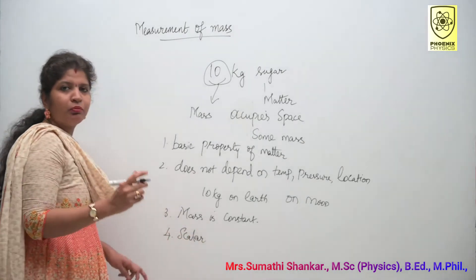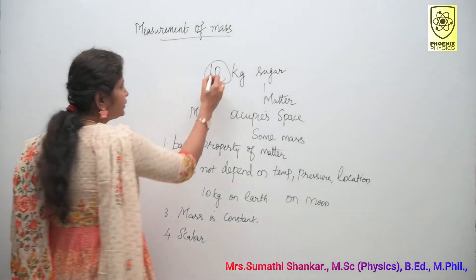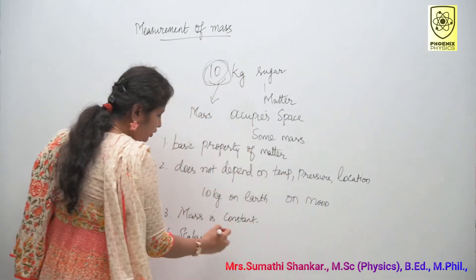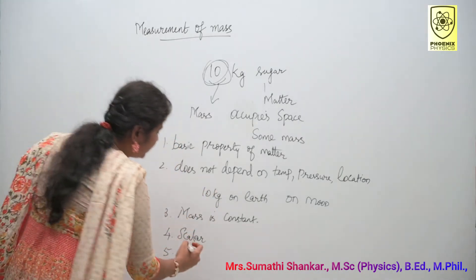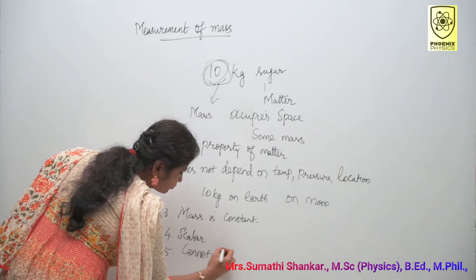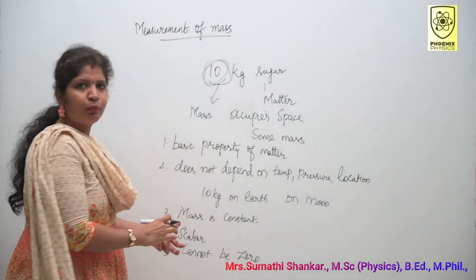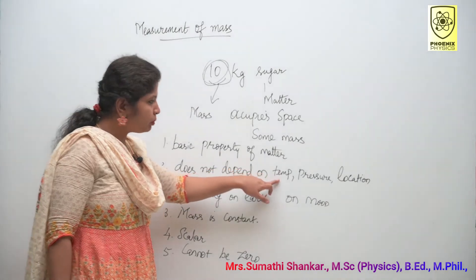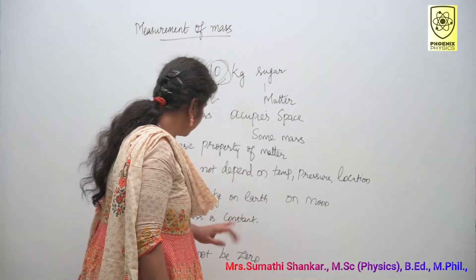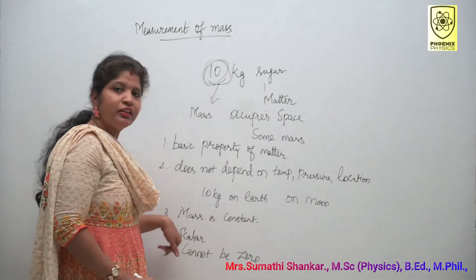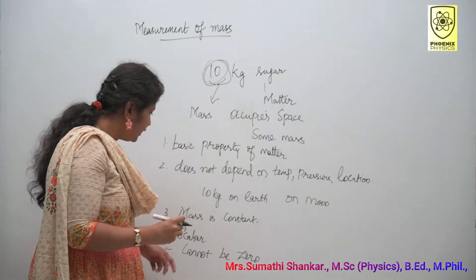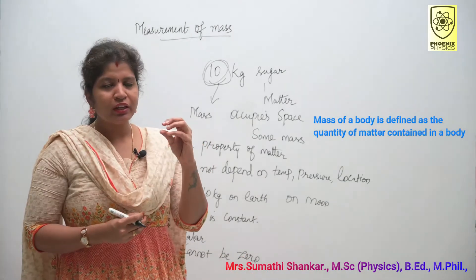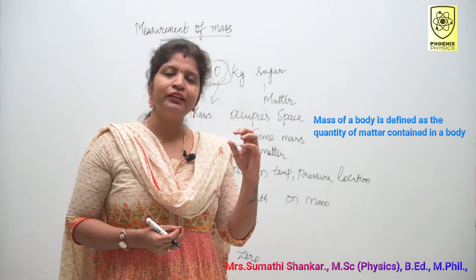Mass is a scalar quantity. What is scalar? Scalar means it has magnitude. So here this 10 is our magnitude. Mass is a scalar quantity. Fifth point is: mass of an object cannot be zero. These are all the properties of mass. Mass is the basic property of matter. It does not depend on temperature, pressure, and location of an object. Mass is constant everywhere. It is a scalar quantity, which means it has only magnitude. Mass of an object cannot be zero. So mass of a body is defined as the quantity of matter contained in a body.